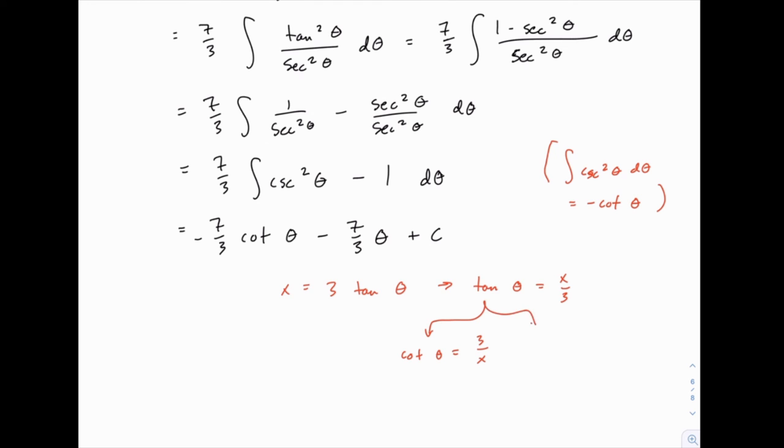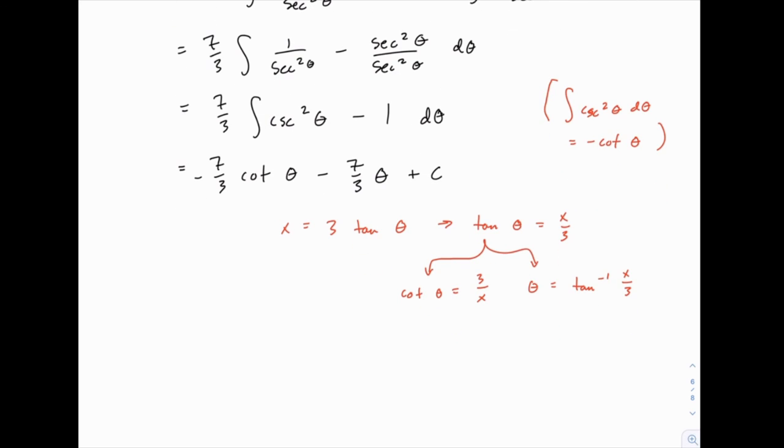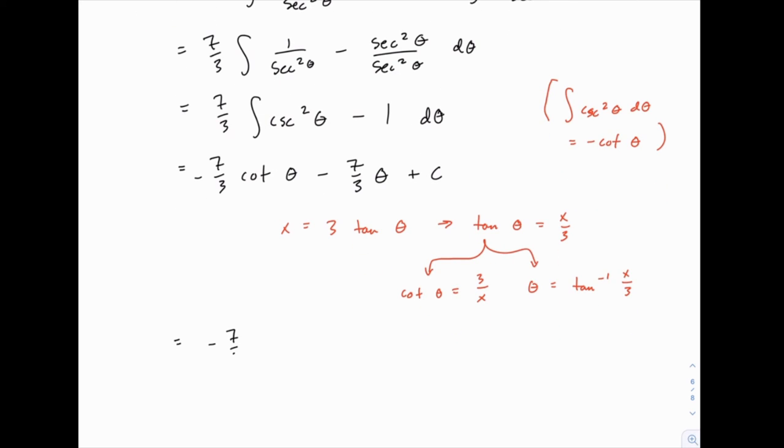And then also, more simply, if tangent theta equals x over 3, theta is just the tangent inverse of x over 3. Which means we can replace both of these. And our answer becomes negative 7 thirds times 3 over x minus 7 thirds times the tangent inverse of x over 3 plus c. And then, of course, we can simplify the 7 thirds times 3 over x to be negative 7 over x. And that's entirely optional. Either one of those last two lines would be fine.